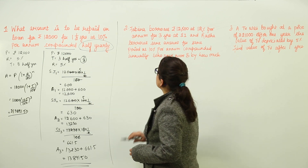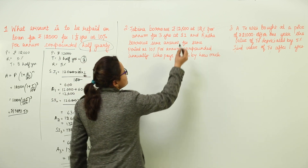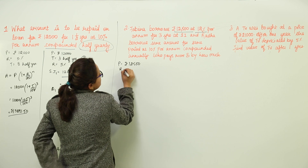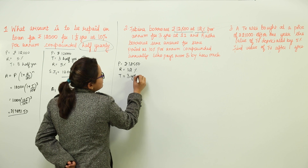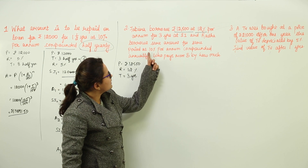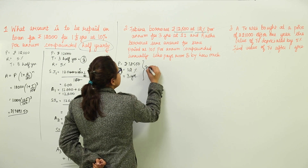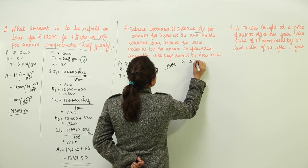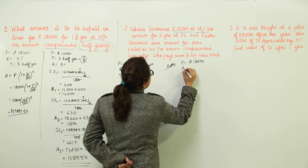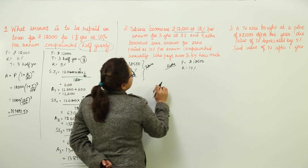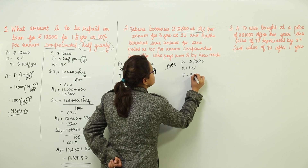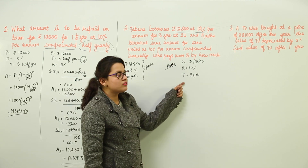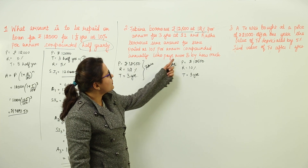Let us move on to the second question. Fabina borrows Rs. 12,500 at 12% per annum simple interest for 3 years. Radha borrows the same amount for the same period at 10% per annum compounded annually. The principal for both is Rs. 12,500 and time period is 3 years. The key difference is Fabina pays simple interest while Radha pays compound interest. We need to find who pays more and by how much.